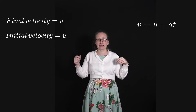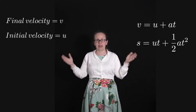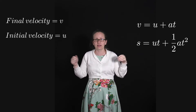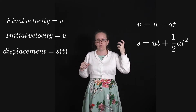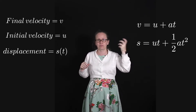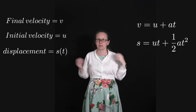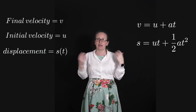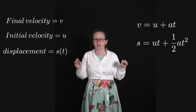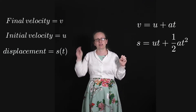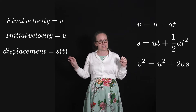The second kinematic equation is s = ut + ½at². Here s describes the displacement of the final position measured from the first position, so we're assuming the initial displacement is equal to zero. The final kinematic equation is v² = u² + 2as.